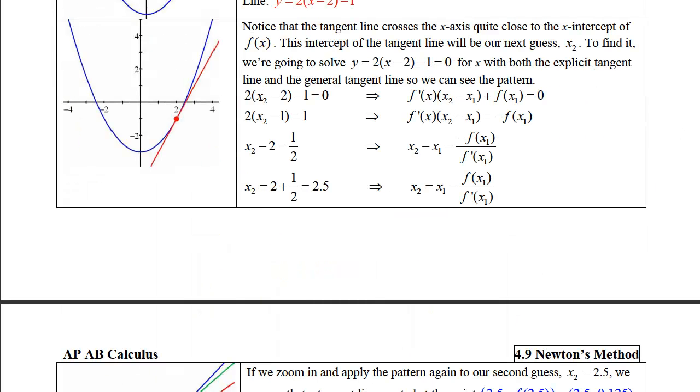So here is our specific tangent line. We're setting that 2 times x sub 2 minus 2 minus 1 equals 0. We can add 1, divide by 2, and then add 2. And notice that if we do the same process with the general tangent line, which was x minus x sub 1 times the tangent slope times f of x sub 1.